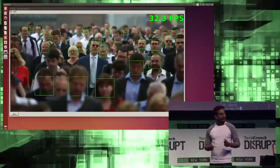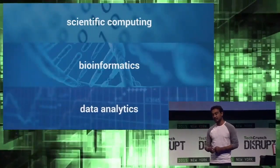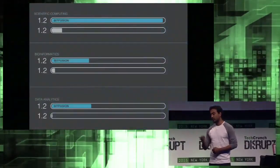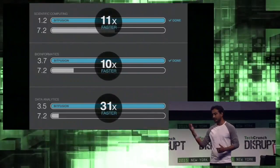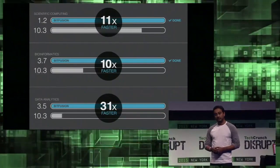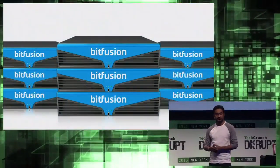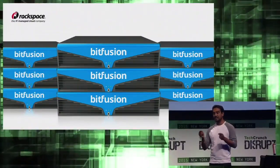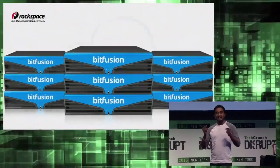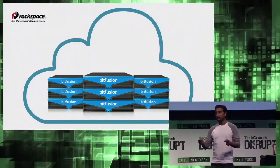We have already shown success in speeding up applications in scientific computing, bioinformatics, and data analytics by an order of magnitude, as you can see behind me. We already have early adopters in all of these areas. We want to take it even further to provide easy access to supercomputing. Towards that, this week, through our partnership with Rackspace — the number one managed cloud hosting provider — we are providing easy on-demand access to the most powerful hardware accelerators through our super cloud.